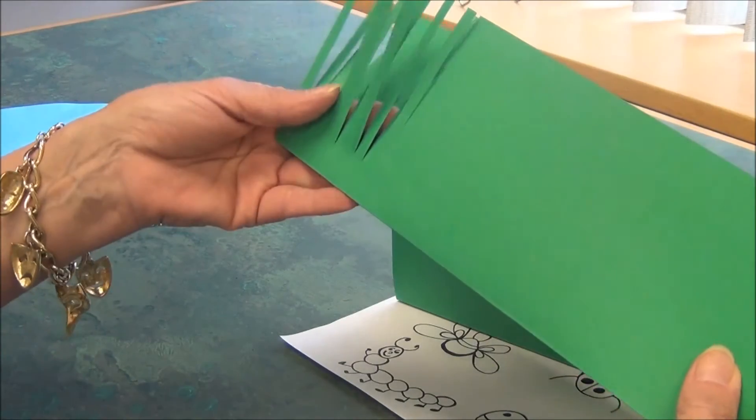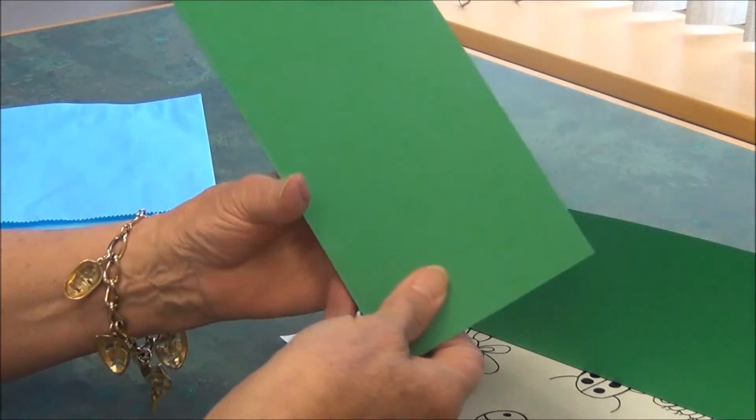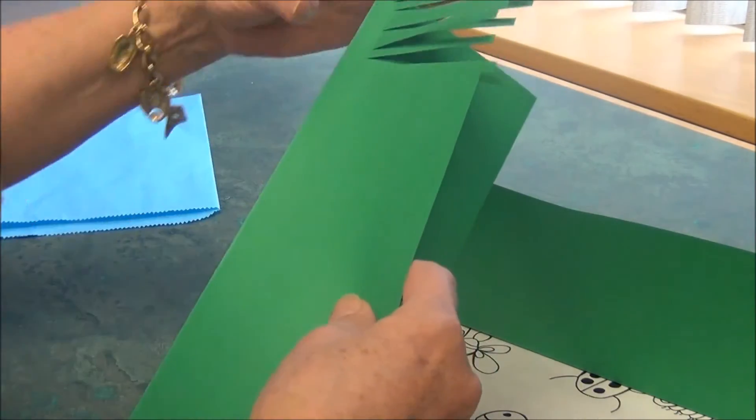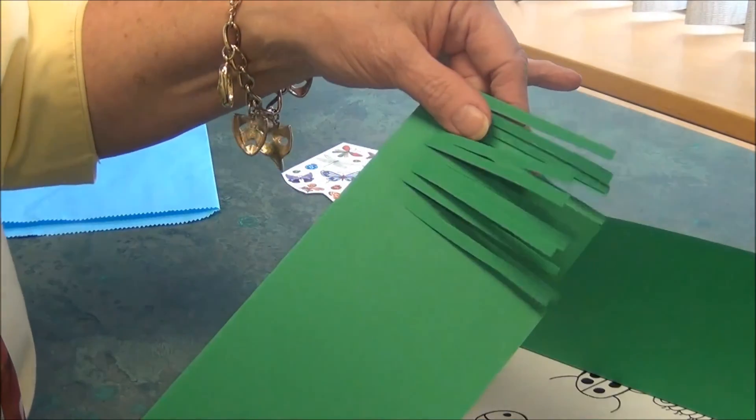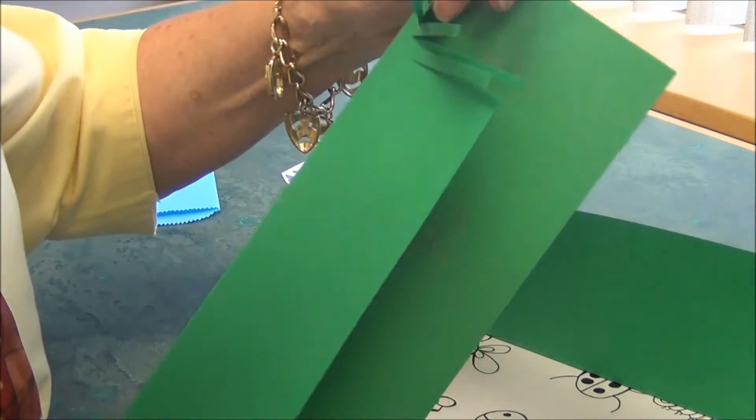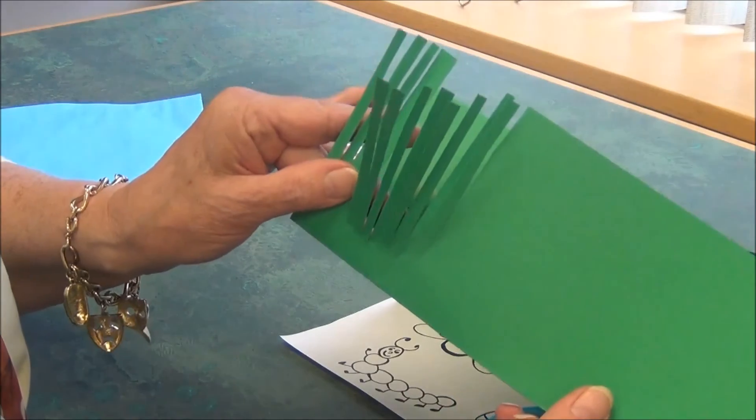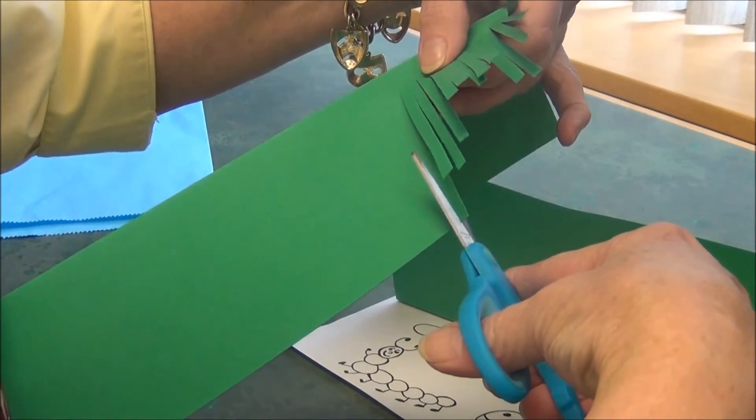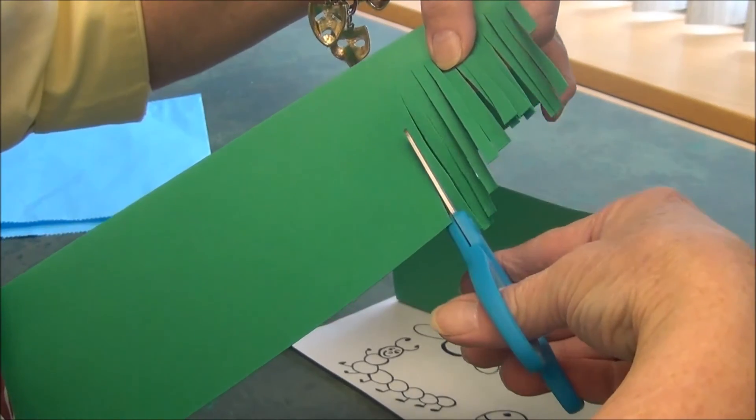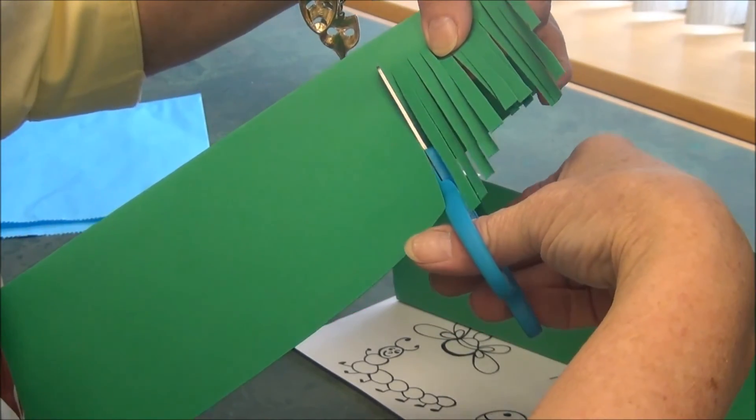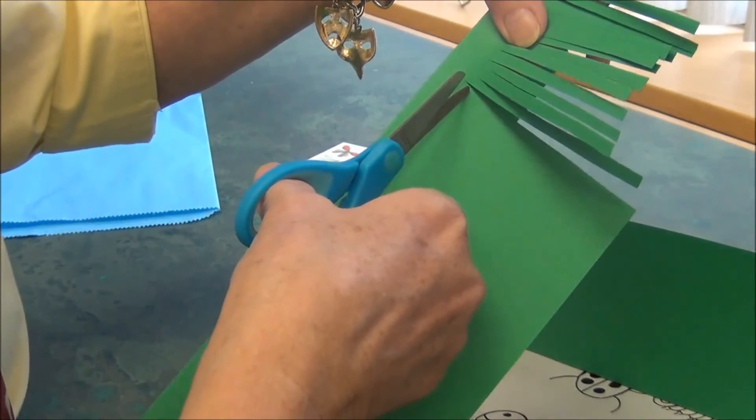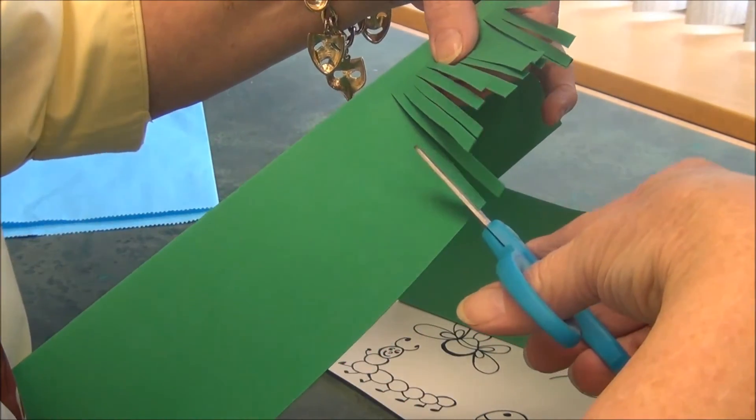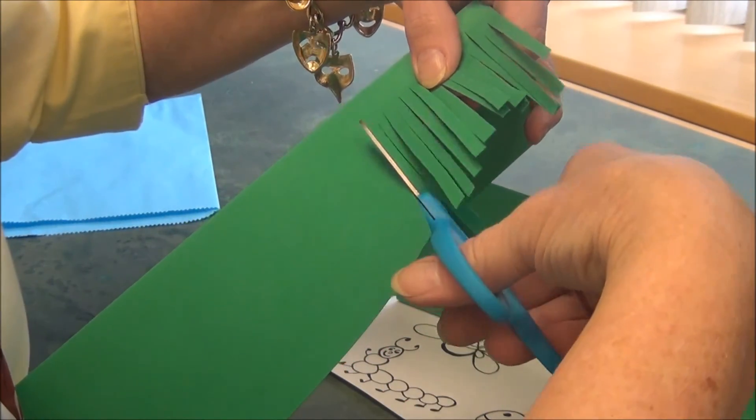Take your paper and your scissors and begin to cut strips only on this side of the green paper, like this, and then make sure you stop down there. The strips will be about one-quarter to one inch wide.